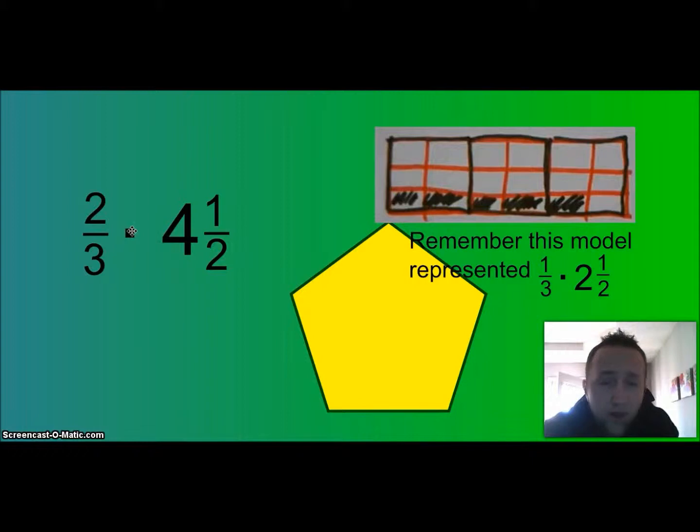So you need to go ahead and draw a model for two thirds times four and a half. So go ahead and draw out a model that represents two thirds times four and a half and then you need to go ahead and solve for that and give me the product. So I need the product of two thirds times four and a half but I also need you to go ahead and draw the model. That's right draw it. If you can draw it you'll be able to understand it.